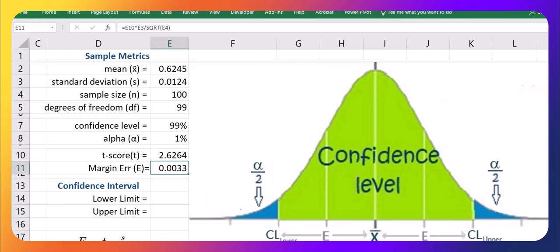So once we've got our margin of error, that is actually what we add and subtract from our sample mean to get our lower and upper bounds for our confidence interval.